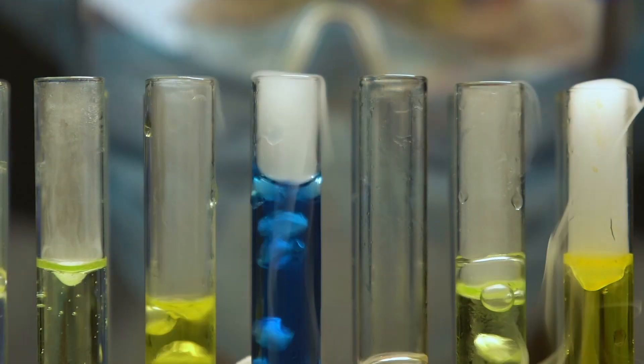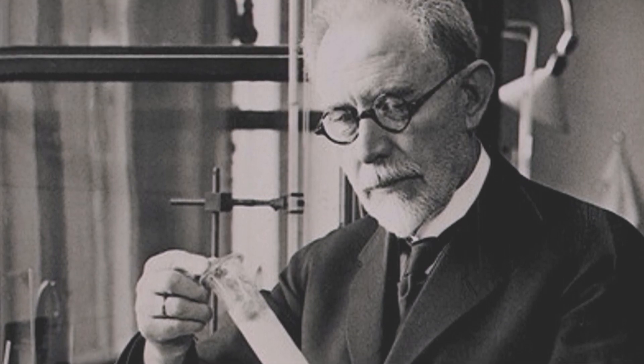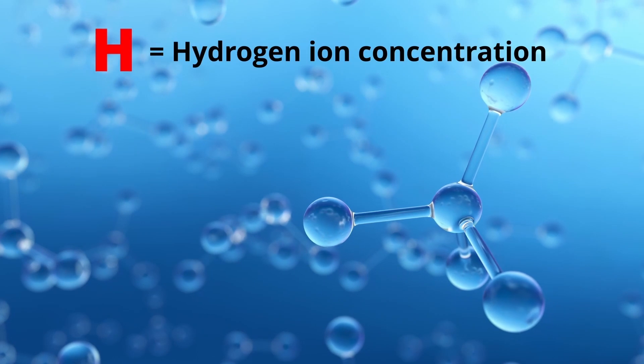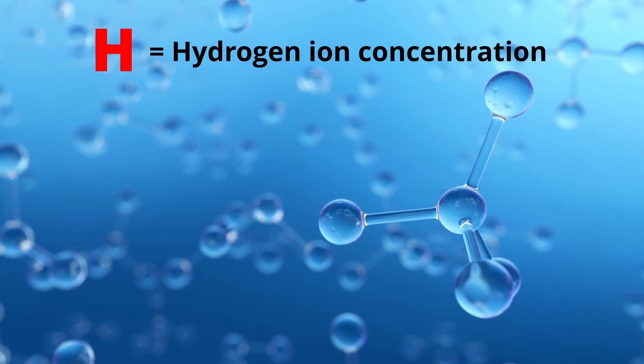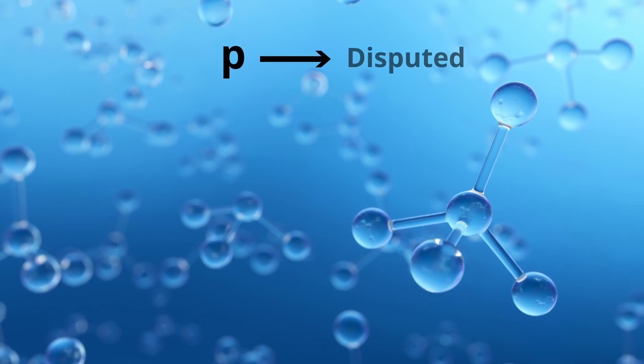The concept of pH was first introduced by a chemist named Soren Peter Loritz, who worked at the Carlsberg laboratory in Copenhagen. The H represents the hydrogen ion concentration, upon which the entire concept revolves, but the exact meaning of the p is highly disputed.